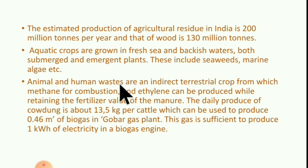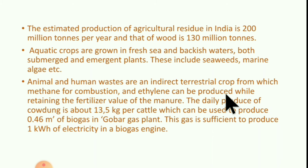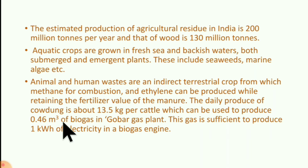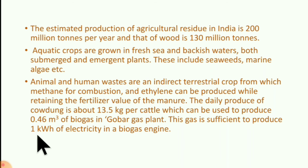Animal and human waste are an indirect terrestrial crop from which methane for combustion and ethane can be produced, while retaining the fertilizer value of the manure. The daily produce of cow dung is about 13.5 kg per cattle, which can be used to produce 0.46 m³ of biogas in biogas plants. This gas is sufficient to produce 1 kWh of electricity in a biogas engine.